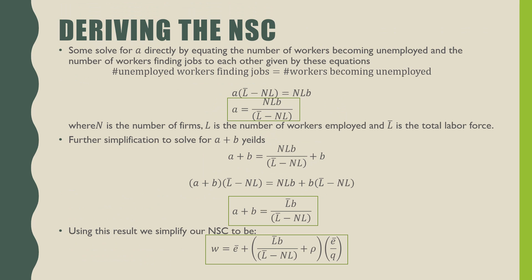Though we solved for the no shirking condition on the previous slide, some solve for A directly by equating the number of workers becoming unemployed and the number of workers finding jobs. We equate unemployed workers finding jobs to the number of workers becoming unemployed, given by these two equations: the job finding rate times the total number of workers L-bar minus the number of employed workers NL equals the number of firms times the number of workers times the job destruction rate. With a little bit of algebra, we get the A term. For further simplification, we want A plus B together, which gives us A plus B equals L-bar times B all over L-bar minus NL.